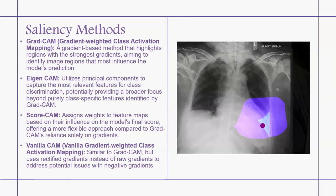Score-CAM assigns weights to feature maps based on the influence on the model's final score, offering more flexibility compared to Grad-CAM's reliance on solid gradients. Vanilla-CAM is similar to Grad-CAM but uses the rectified gradient instead of the raw gradient to address potential issues with negative gradients.